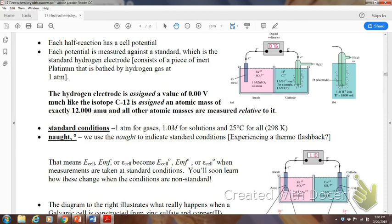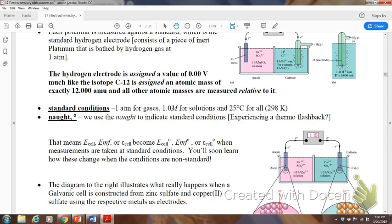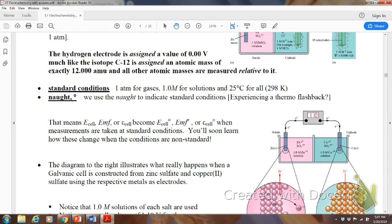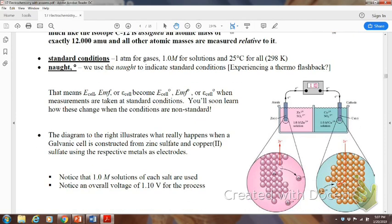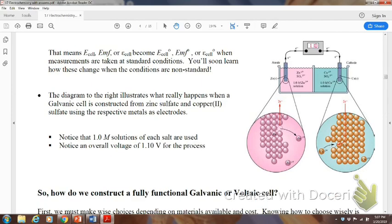So, that means that normally we're going to take this at standard conditions, but you're going to get an equation later on that shows you how to calculate it when you're not at standard conditions, because most of the time you're not at 1 molar. Not always at 25 degrees Celsius. Here is a galvanic cell over here. What really happens? Notice that that 1 molar is used. The overall charge would be 1.10 volts.